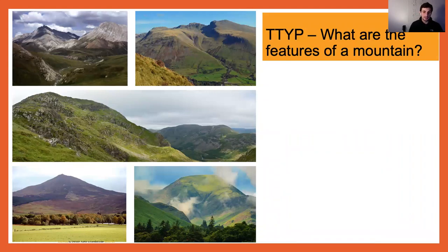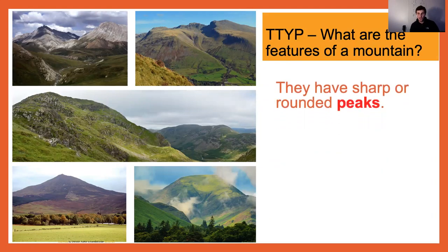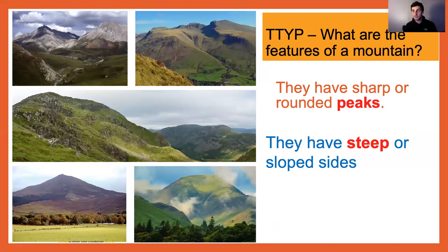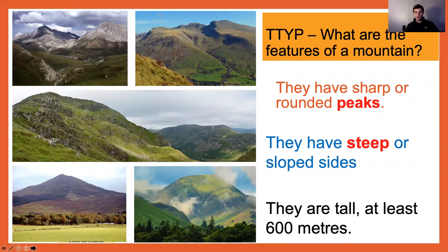So what are the features of a mountain? They have sharp or rounded peaks — the peak is the top of a mountain — and you can see it in all of these different pictures. They have steep or sloped sides; if you imagine a mountain as a triangle, the sides are exactly the same as the sides in a triangle. And they are tall — at least 600 metres high. I've said that three times now, really trying to get that in. A mountain is 600 metres high.